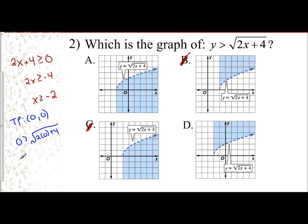Is 0 greater than the square root of 2 times 0 plus 4? Well, that's 0 plus 4. So is 0 greater than the square root of 4? Is 0 greater than 2? No. And so that means this test point of 0, 0 is not in the shaded region. Well, here it is in the shaded region, and so d it's not, and so d is my answer.